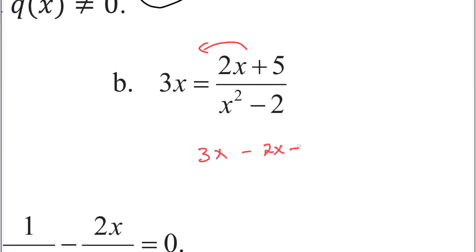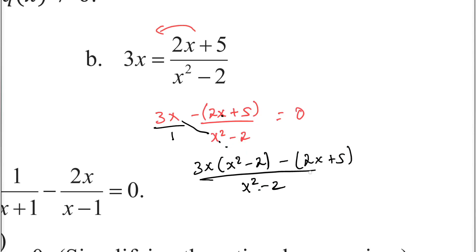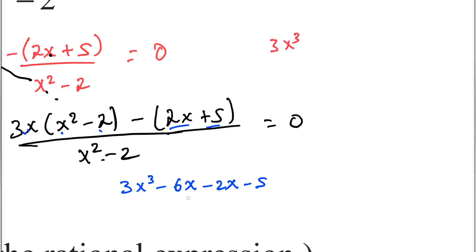We have x minus 2x plus 5 over x squared minus 2 equal to zero. So the numerator expands: 3x times x squared is 3x cubed, 3x times minus 2 is minus 6x, minus 2x, plus 5, minus 5. Collecting terms: 3x cubed, minus 8x, over x squared minus 2 equal to zero.